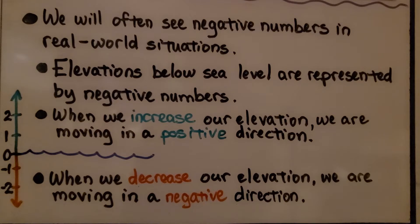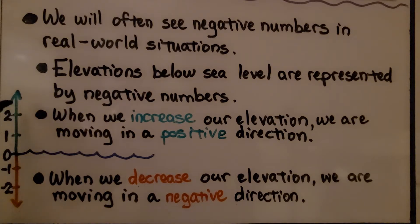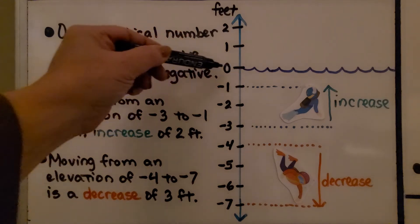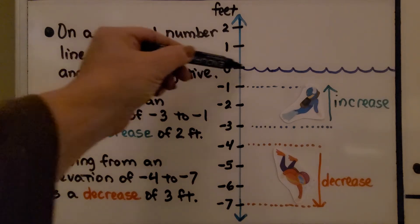We will often see negative numbers in real-world situations. Elevations below sea level are represented by negative numbers. When we increase our elevation, we are moving in a positive direction. When we decrease our elevation, we are moving in a negative direction. On a vertical number line, up is positive and down is negative. We can see the water line is zero — that is sea level.